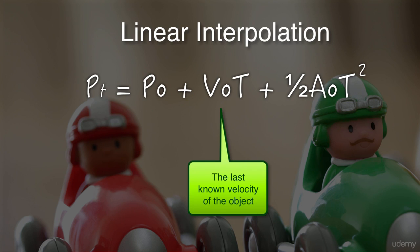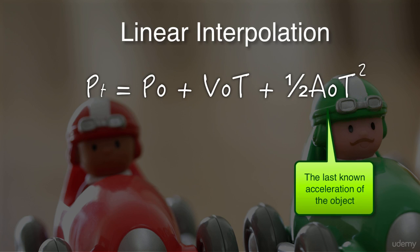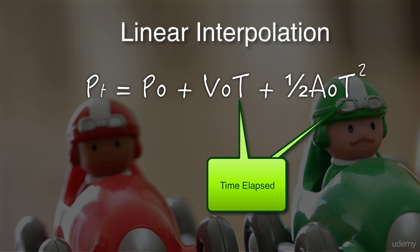V0 is the last known velocity of the object, where velocity includes a direction and also a speed value. A0 represents the object's last known change in velocity, or what we know as acceleration. To calculate the current position of an object, we must know how much time has elapsed between the original values for position, velocity, and acceleration that we have.